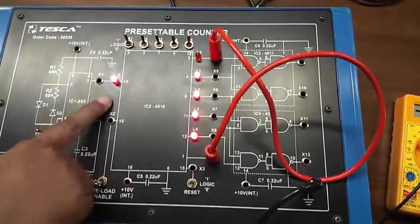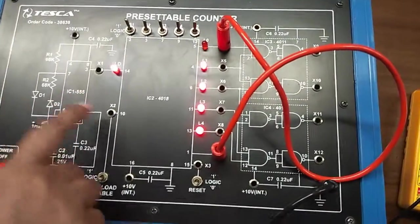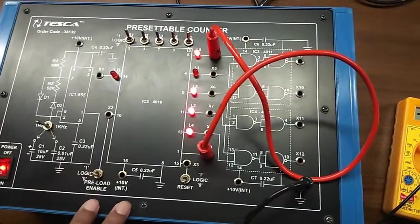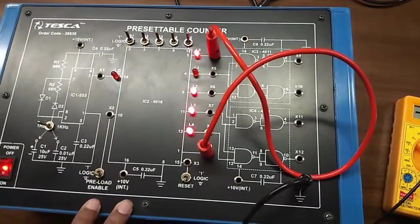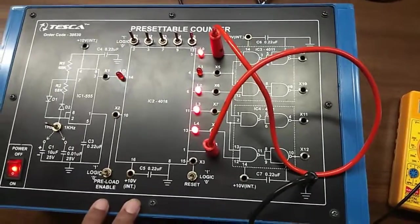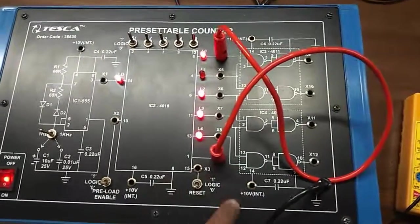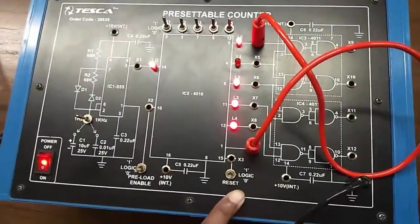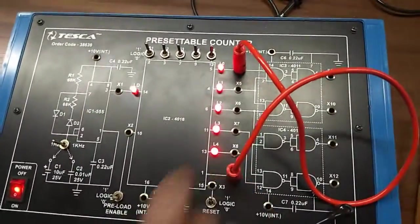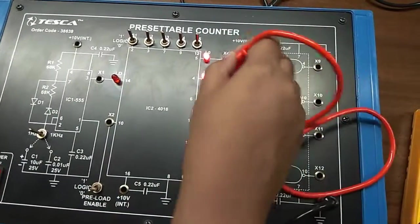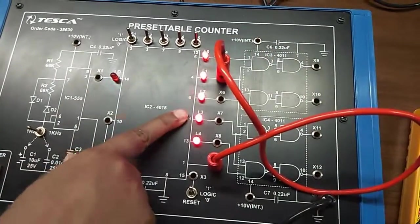You can see within 2 blinkings of LD, only once LED L0 will blink. Now stop the counter by putting reset to 1 and short X5 to X13, this is divide by 4 mode.